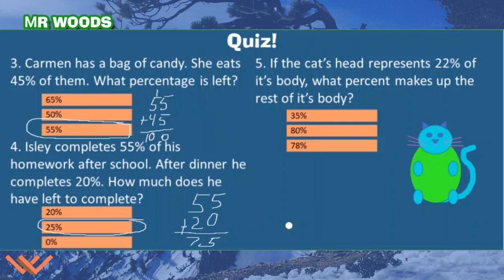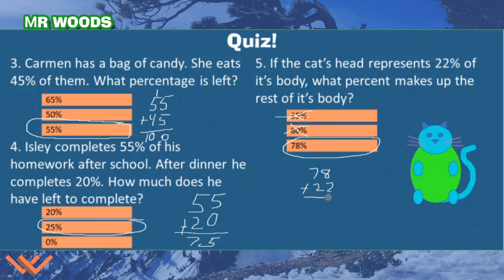Number five: if the cat's head represents 22% of its body, what percent makes up the rest? 22 plus 35 would be 57, so that's not it. 20 plus 80 is 100, but I have 22%, so that's not it either. So it must be 78%. Let's validate: 78% plus 22% — 8 plus 2 is 10, carry the 1 — 1 plus 7 is 8 plus 2 more is 10 — gives me 100%. There's 78%.